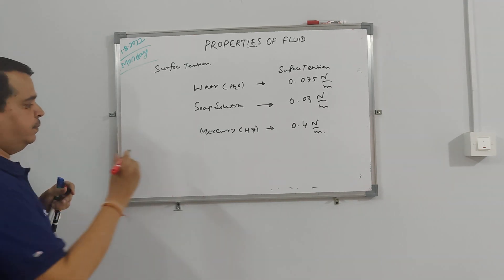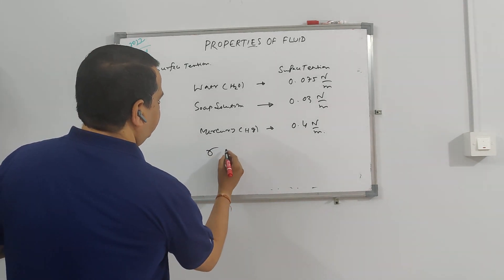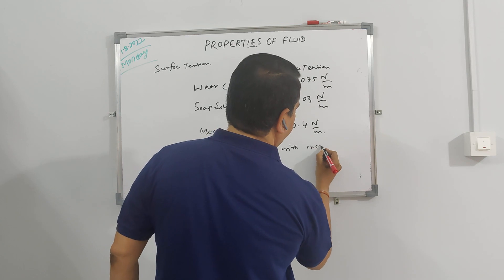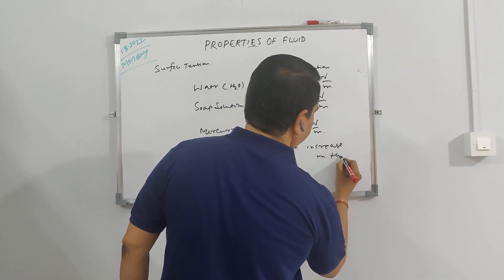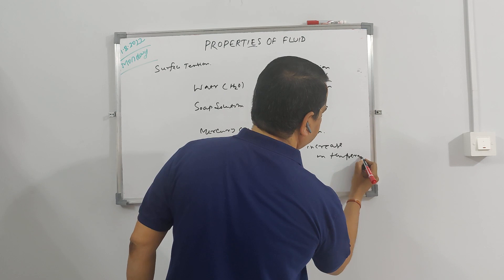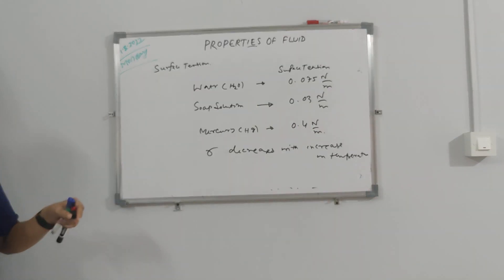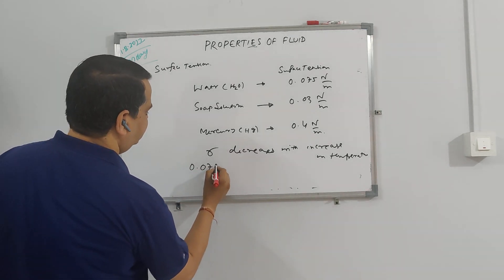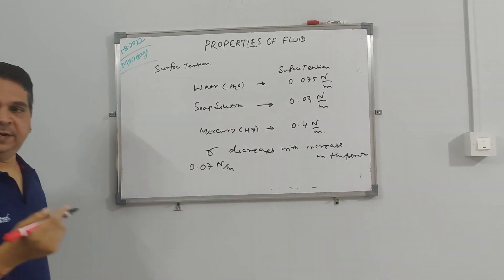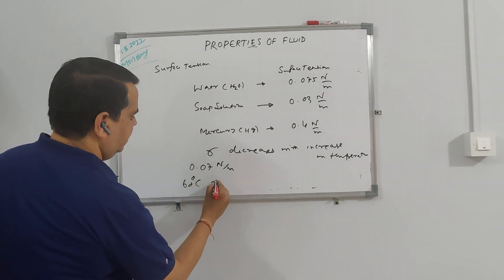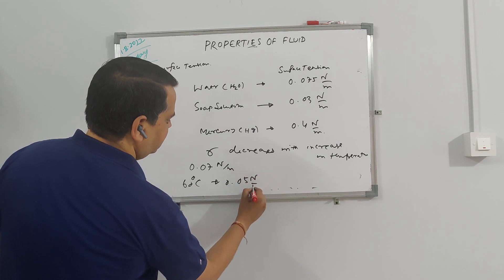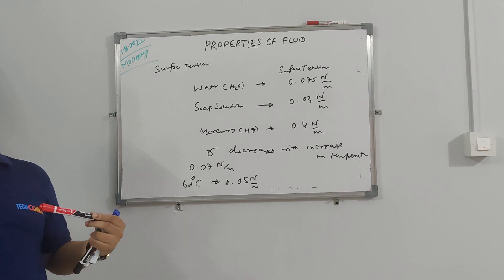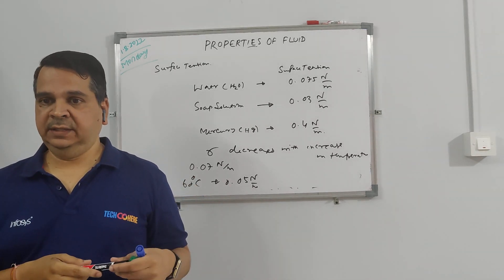Surface tension decreases with increase in temperature. Let's say your soup may have surface tension of 0.07 Newton per meter. If it is 60 degree centigrade or whatever, it may come down to 0.05 Newton per meter or whatever. With decreasing surface tension, it will spread completely. It will wet your tongue like anything.